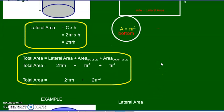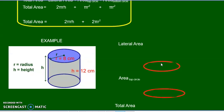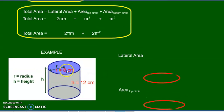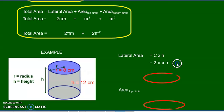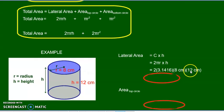Now let's try an example. Here we have a cylinder — let's make the radius 8 and the height 12. What is going to be the lateral area? We'll just use the formula: circumference times height. If we know the radius, the circumference is 2πr times the height, which is 12. So let's plug in all the numbers: 2 times π times radius times height.